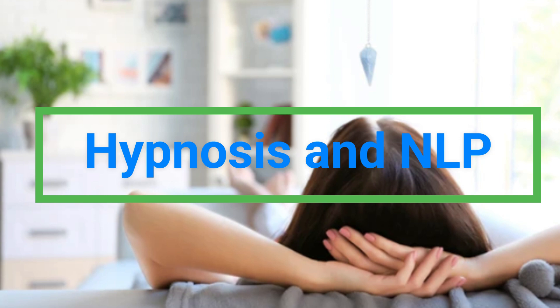Deepening methods: once the person is in a light state of hypnosis, you can deepen the trance to increase suggestibility. Techniques include counting down — counting backward from 10 to 1, with each number deepening their relaxation. Deepening imagery: asking them to imagine descending a staircase or elevator, with each step or floor bringing them into a deeper state of hypnosis. Progressive relaxation: further guiding them to relax more deeply by focusing on sensations in different parts of the body.